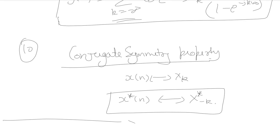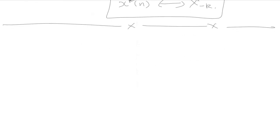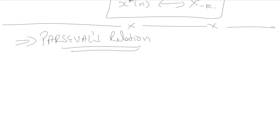So these are the ten properties of discrete time Fourier series, which are the counterparts of the continuous time Fourier series properties. Next is Parseval's relation for discrete time signals. It states that the average power of a periodic signal — given by (1/N)·Σ|x[n]|² — equals the average power contained in the harmonics of the Fourier series coefficients.